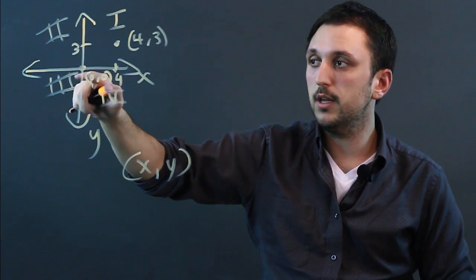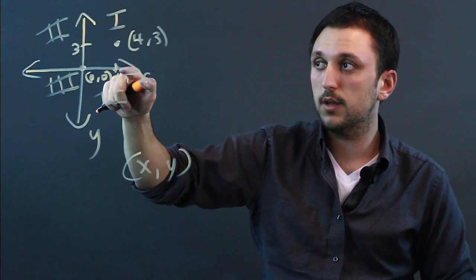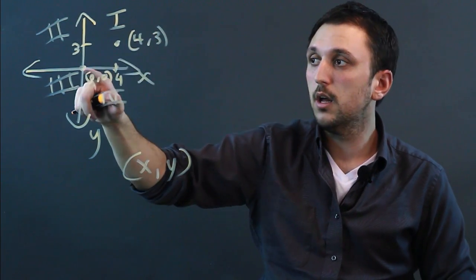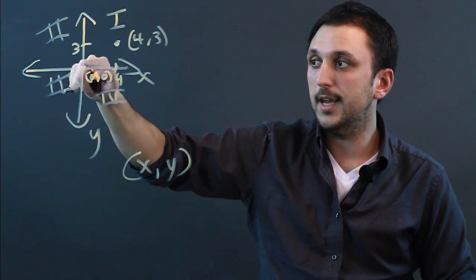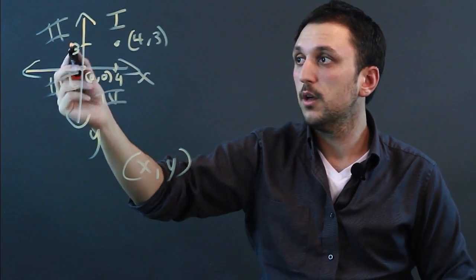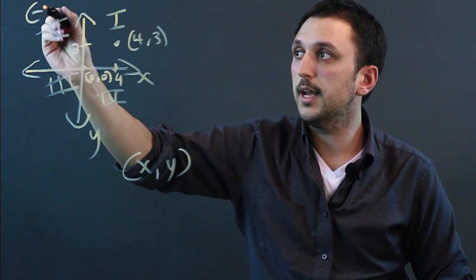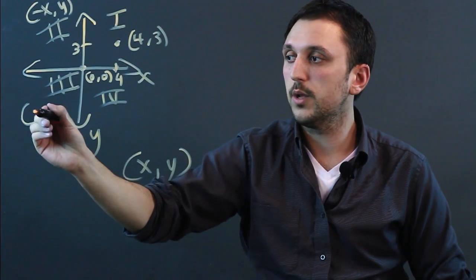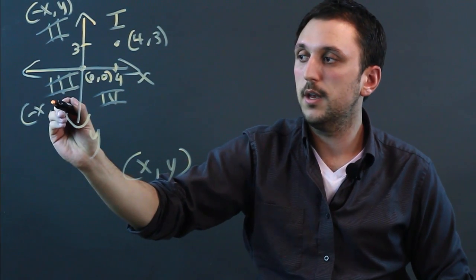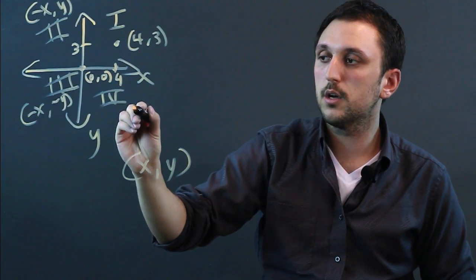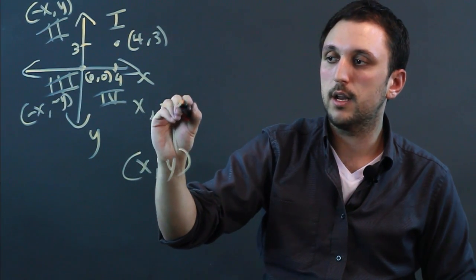And what we have is this is positive x, and up is positive y, left is negative x, and down is negative y. So over here we have negative x, positive y, over here we have negative x, negative y, and over here we have x and negative y.